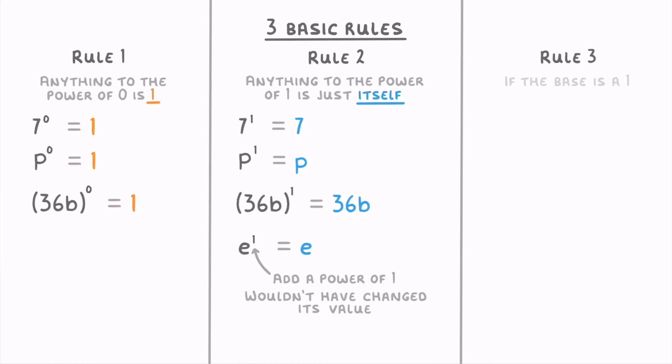The last rule is that if the base of a number is a 1, like 1 to the power of 5, 1 to the power of c, or 1 to the power of 12a, then the answer will always be 1. So these are all equal to 1. This is because it doesn't matter how many times you multiply 1 by itself, it's always going to be equal to 1. For example, 1 to the power of 5 is just 5 sets of 1 all multiplied together, which is still just 1.